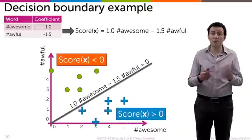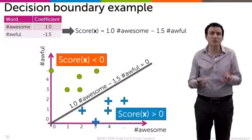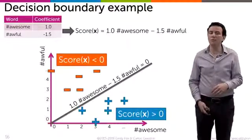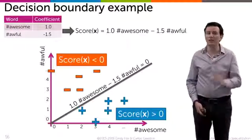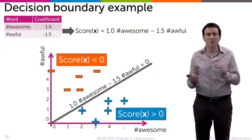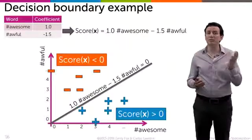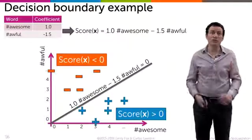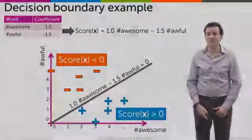For the points above the line, if you check, you'll see all of those have a negative score, so we're going to label all of those as negative predictions. Everything below the line is positive, everything above the line is negative — that's what makes it a linear classifier, or really a linear decision boundary.